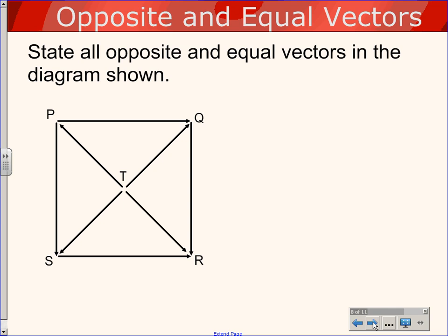Here's an example for us. We've got some points P, Q, R, S, and T. What we want to do is try and state all the opposite and all of the equal vectors that we can. There are lots in this picture. You have to look carefully and notice where the arrows are, because I've made it specific that these have particular directions. For now, let's just go with the direction of the arrows.